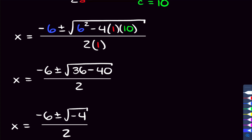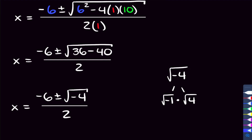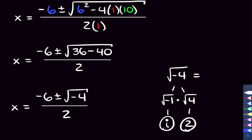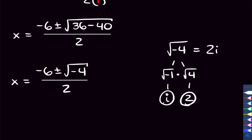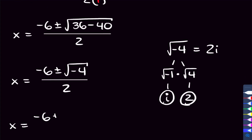What we can do is simplify the square root of negative 4. To simplify it, I'm going to write the square root of negative 4 as the square root of negative 1 times the square root of 4. The property of square roots says that multiplying those two square roots together equals the square root of negative 1 times 4, which is negative 4. The square root of negative 1 is the imaginary number i, and the square root of 4 is 2. So the square root of negative 4 is 2i. We write x equals negative 6 plus or minus 2i, over 2.